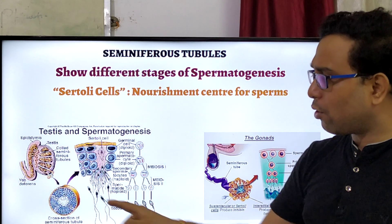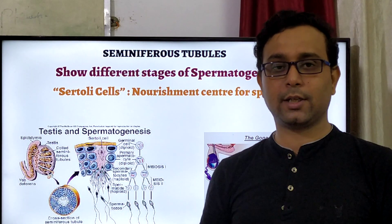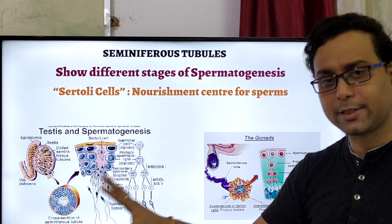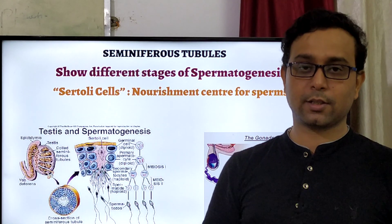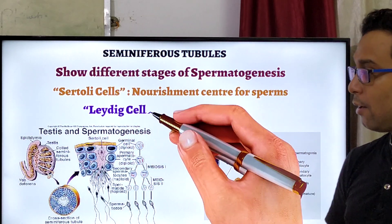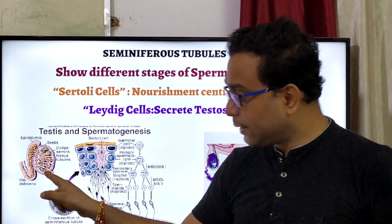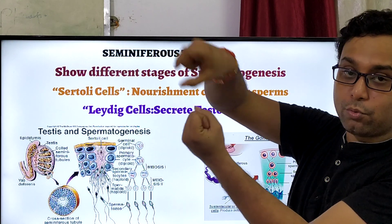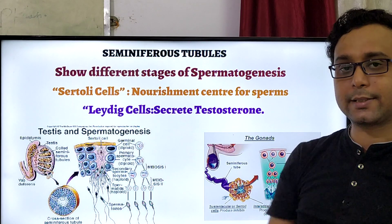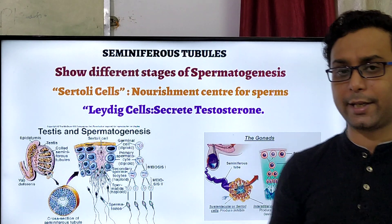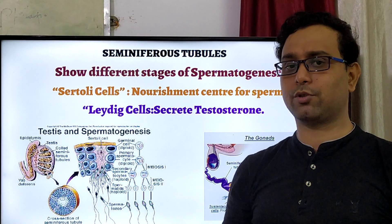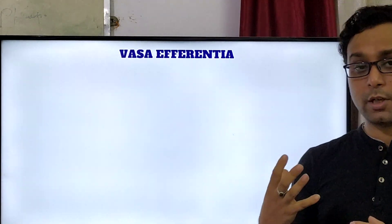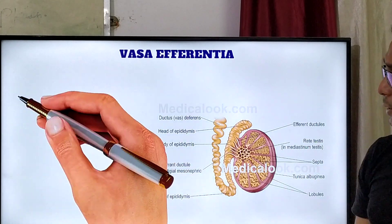Inside the seminiferous tubules, long structural cells are present — called Sertoli cells. Sertoli cells give nourishment to the developing sperm. The primary spermatocytes and secondary spermatocytes get nutrients from the Sertoli cells. Another cell is present — that is the Leydig cells. Many tubular structures are coiled together, and between the two seminiferous tubules, cells are present — that is the Leydig cells, also called the interstitial cells of Leydig, because they are present between the two seminiferous tubules. Their function: they produce or secrete the testosterone hormone, which is the male secondary sexual hormone, developing secondary sexual characteristics.